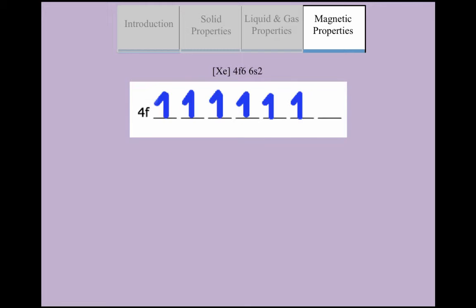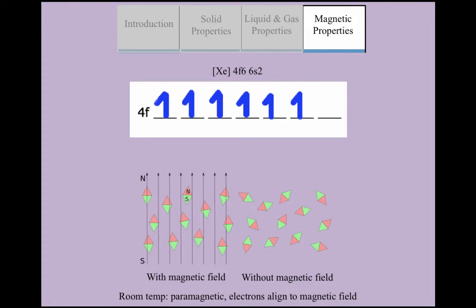Samarium has six unpaired electrons in its f orbital, making it paramagnetic at room temperature. The six unpaired electrons, each with the same spin, give samarium its high magnetic moment. This gives it a high magnetic field strength, which makes it desirable in powerful magnets.